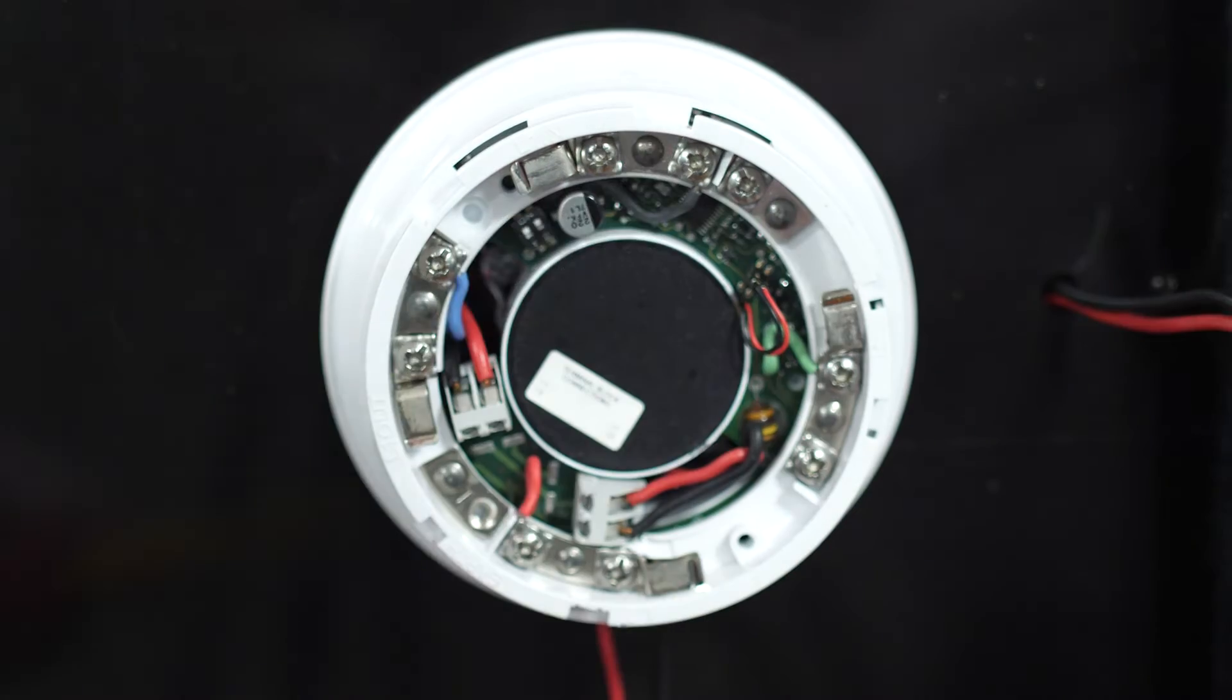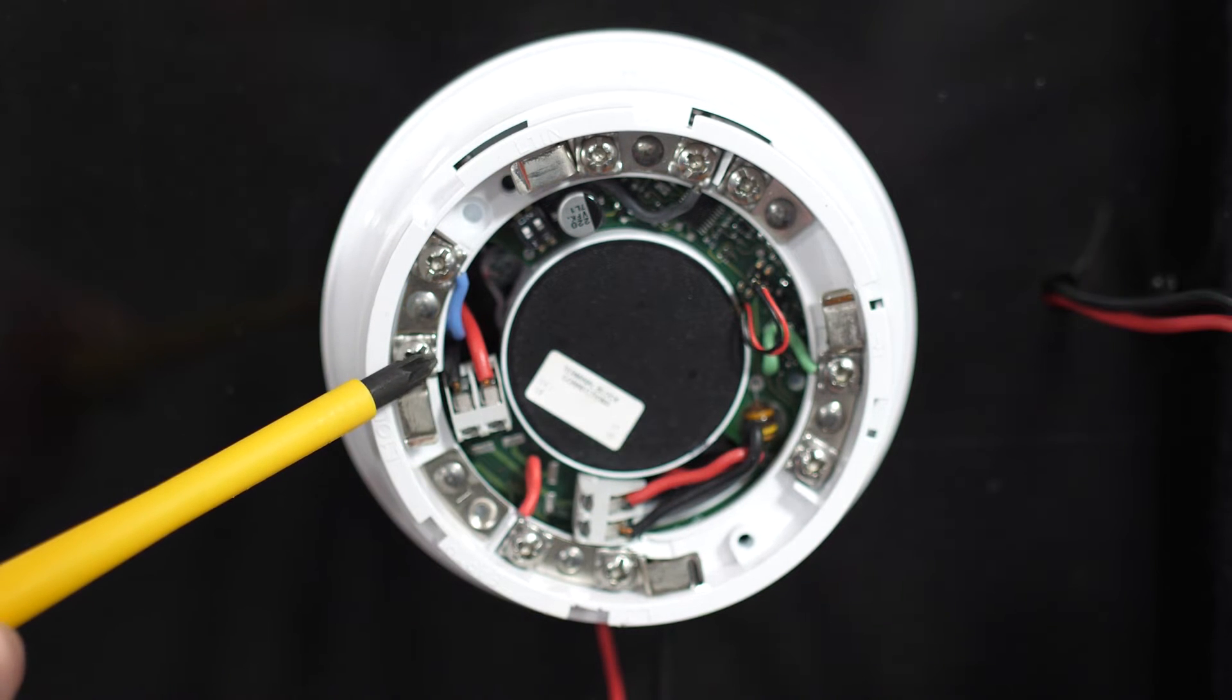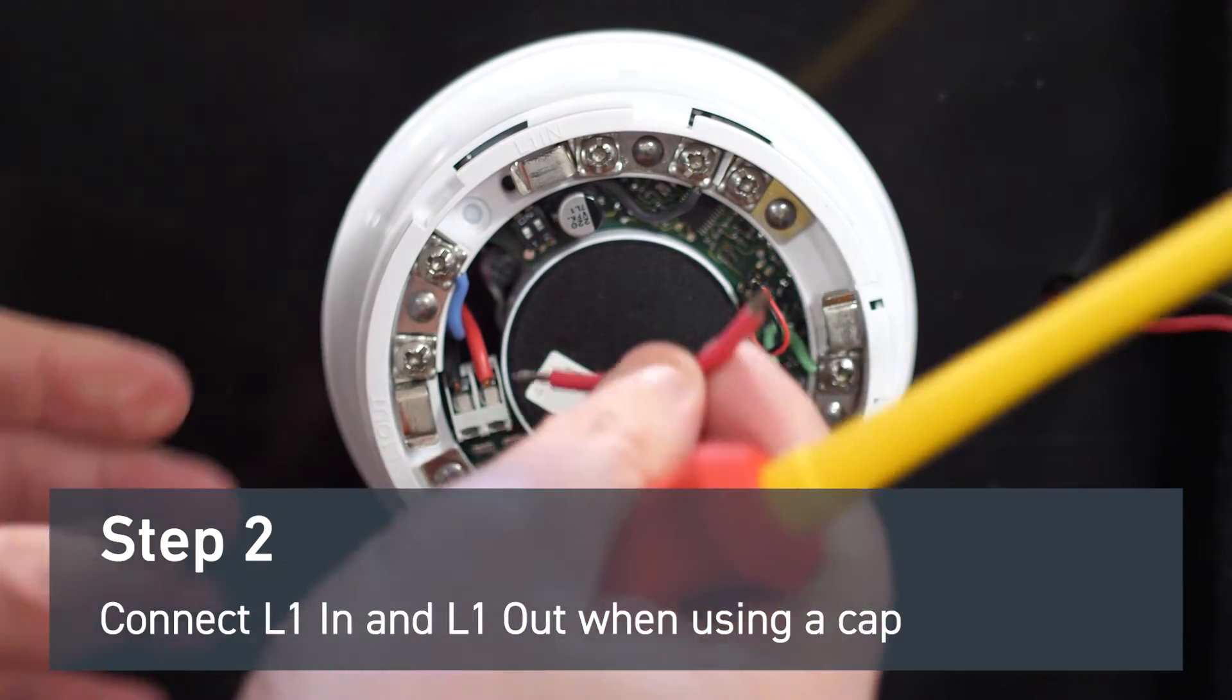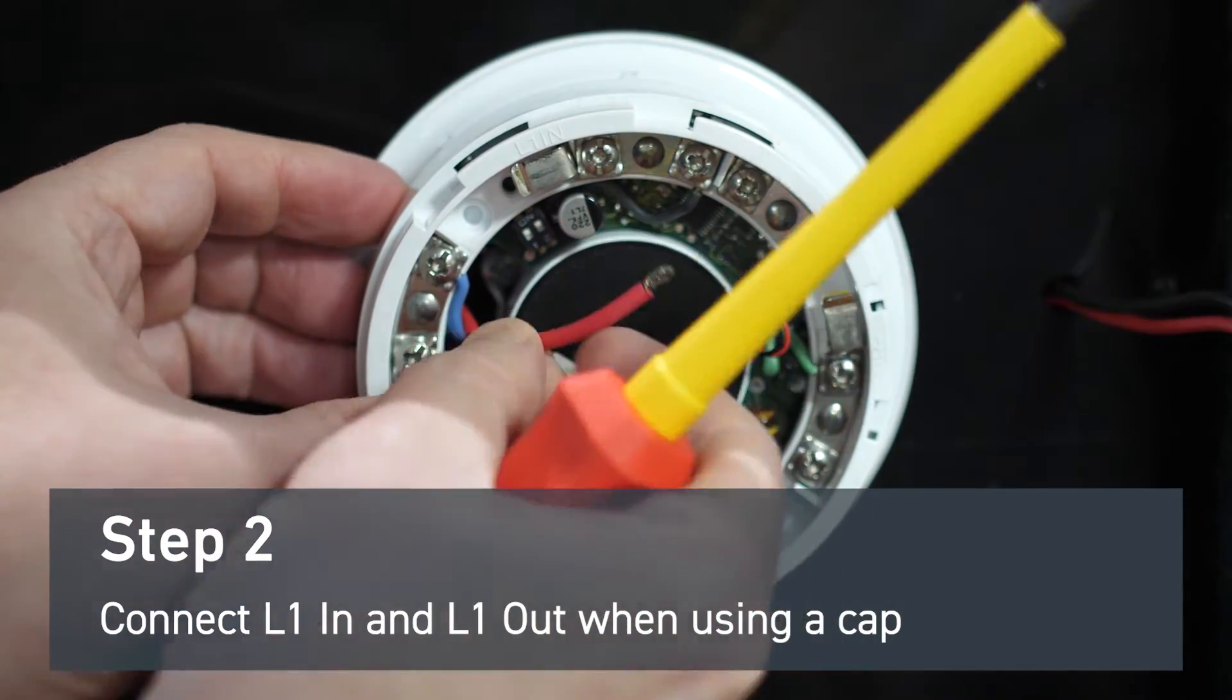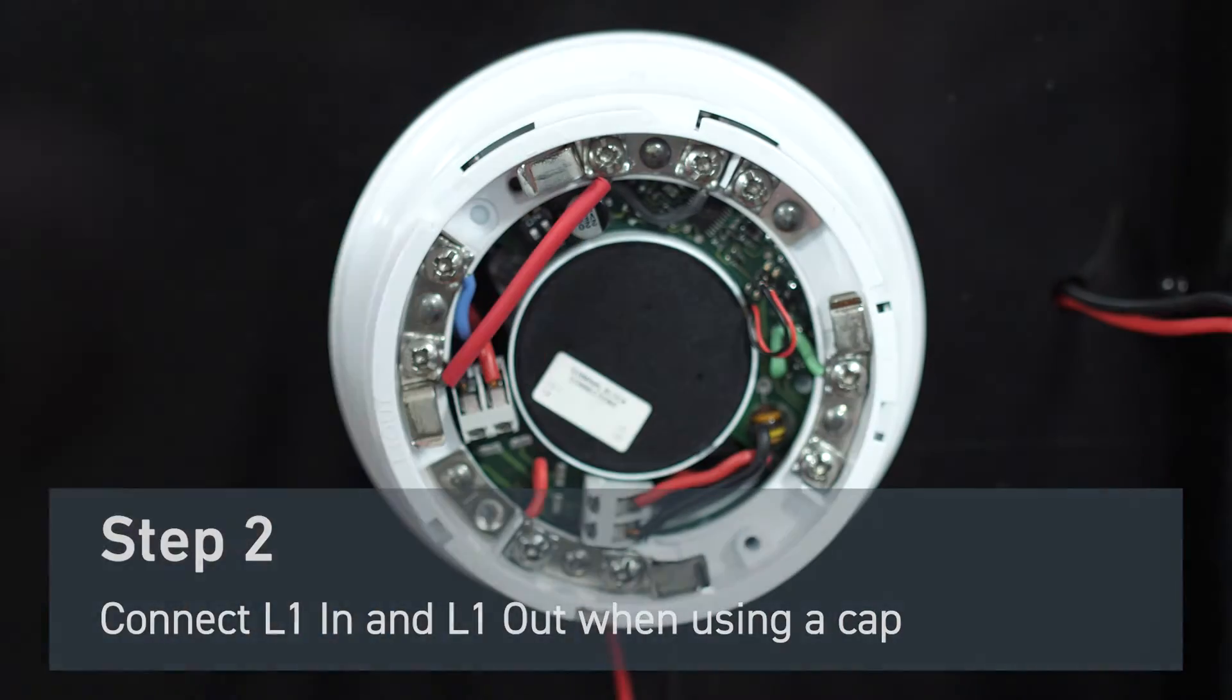If you're not fitting an alarm sense detector but instead fitting a cap, then you will require a wire link between the outer ring terminals L1 in and L1 out. If you don't fit the link, then you will get a head removal fault at the fire alarm panel.